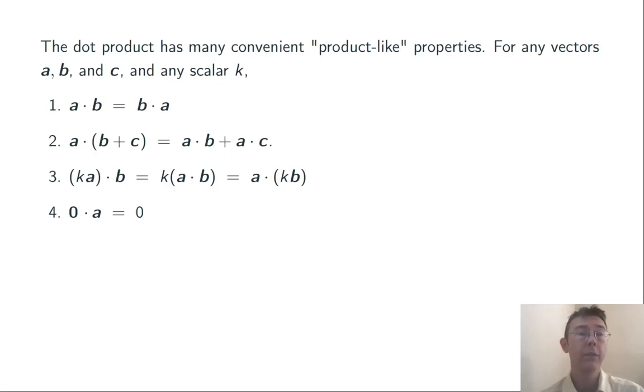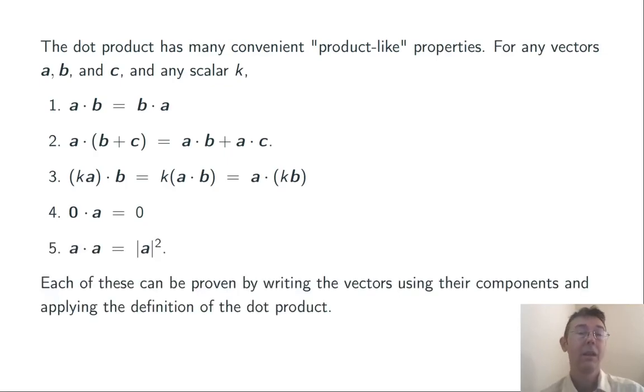By the way, notice that the zeros on each side of this equation represent different sorts of things. On the left, we have the n-dimensional 0 vector, ⟨0, 0, 0, ...⟩. On the right, we just have the number 0, the scalar value.